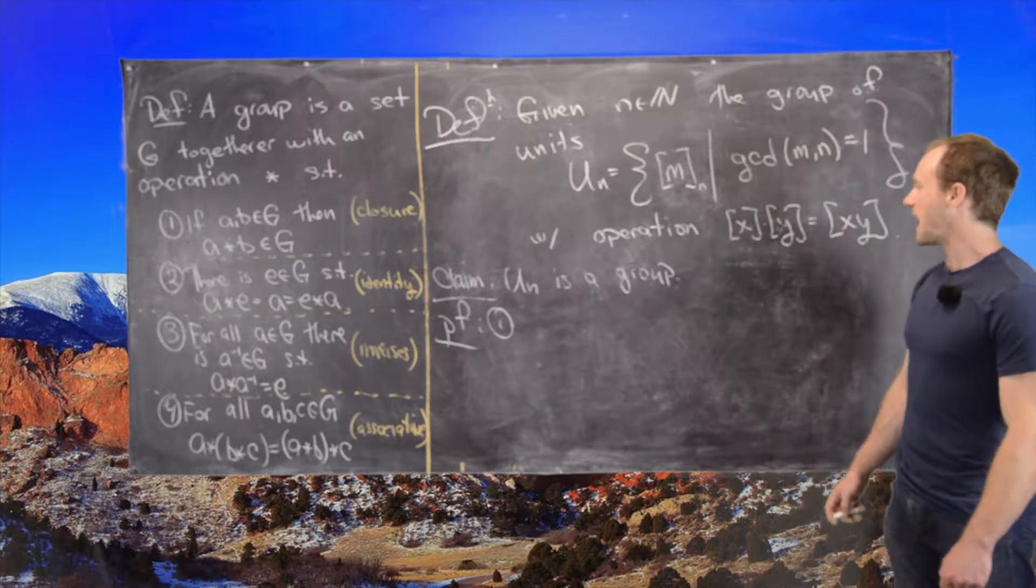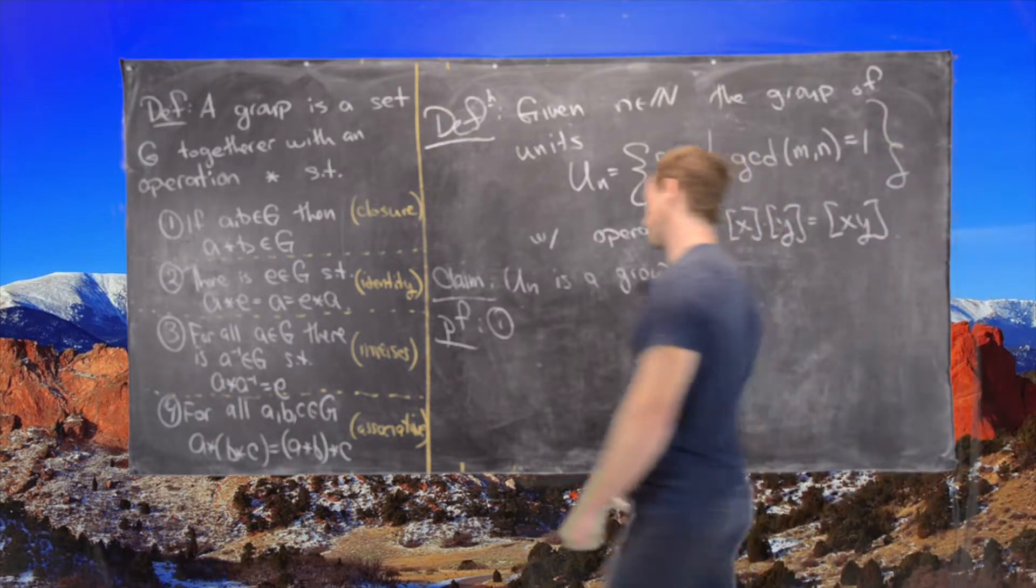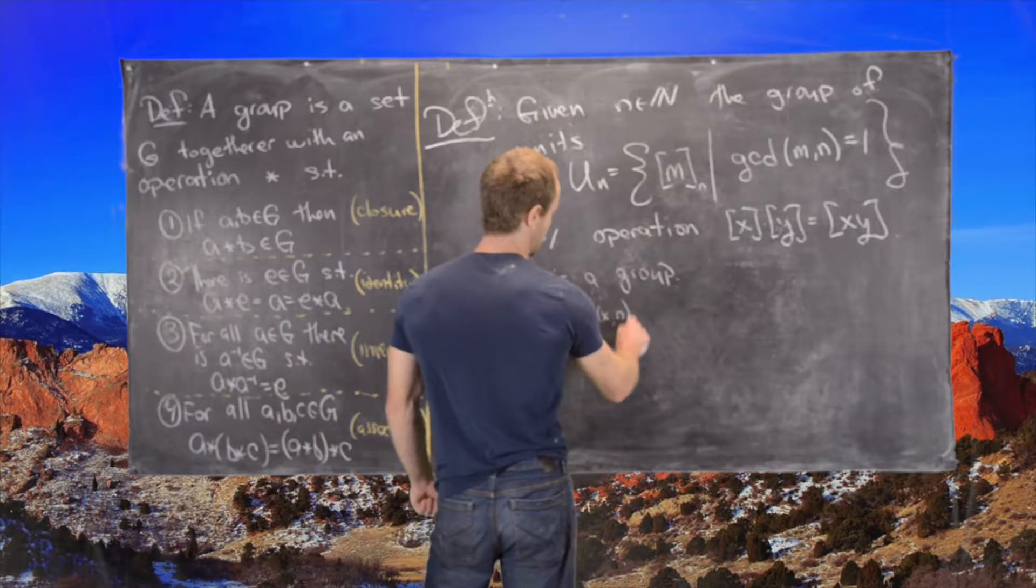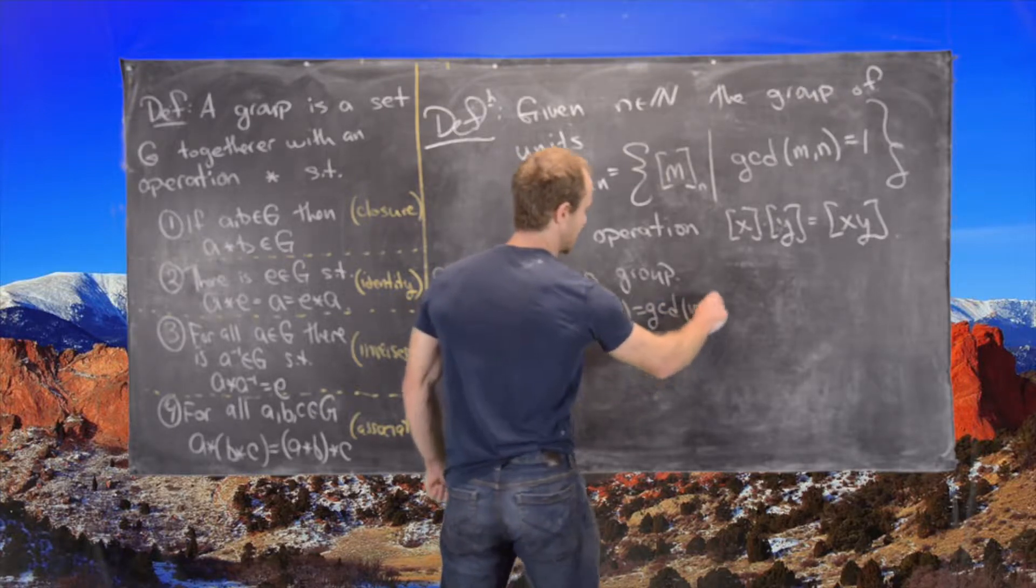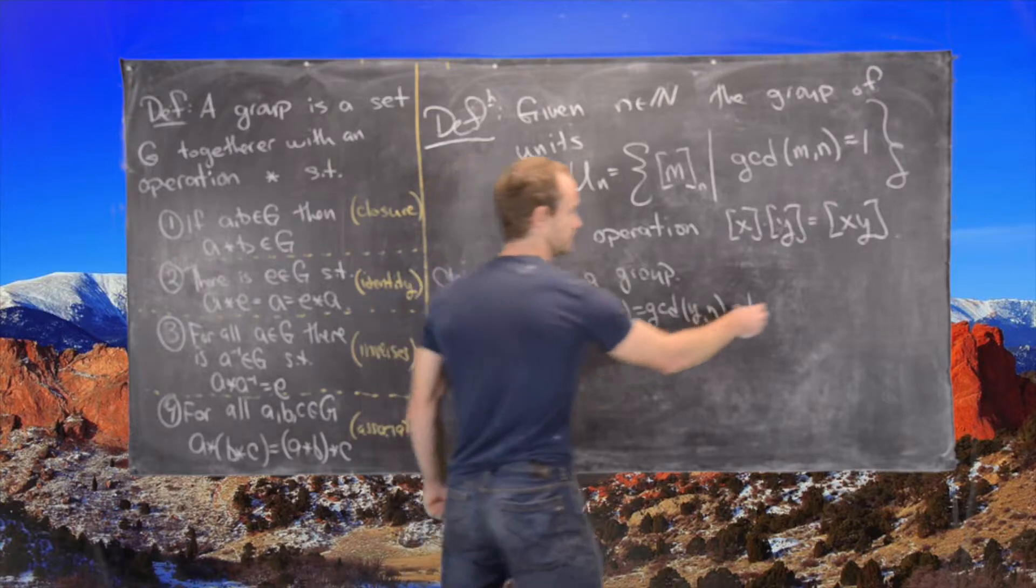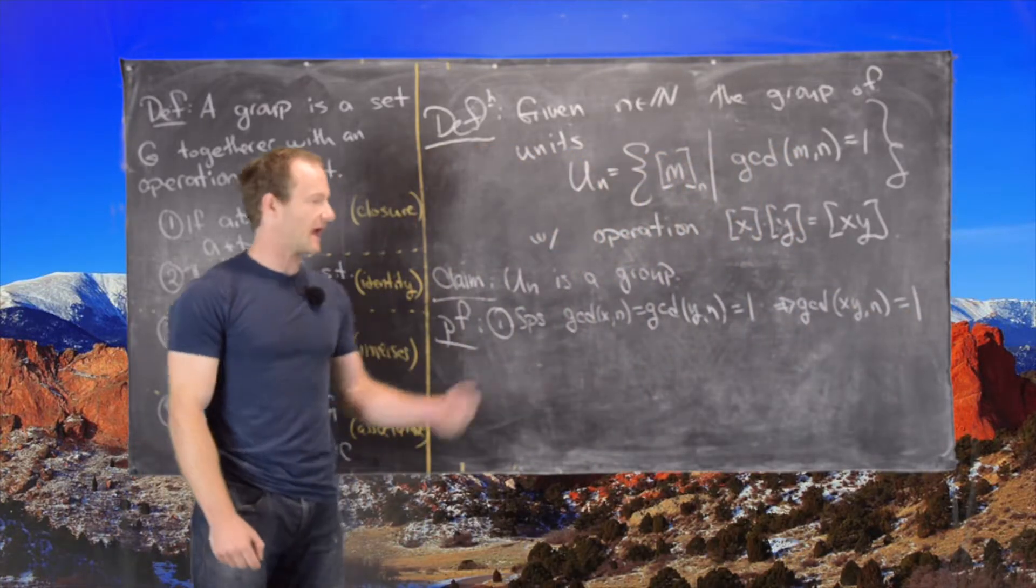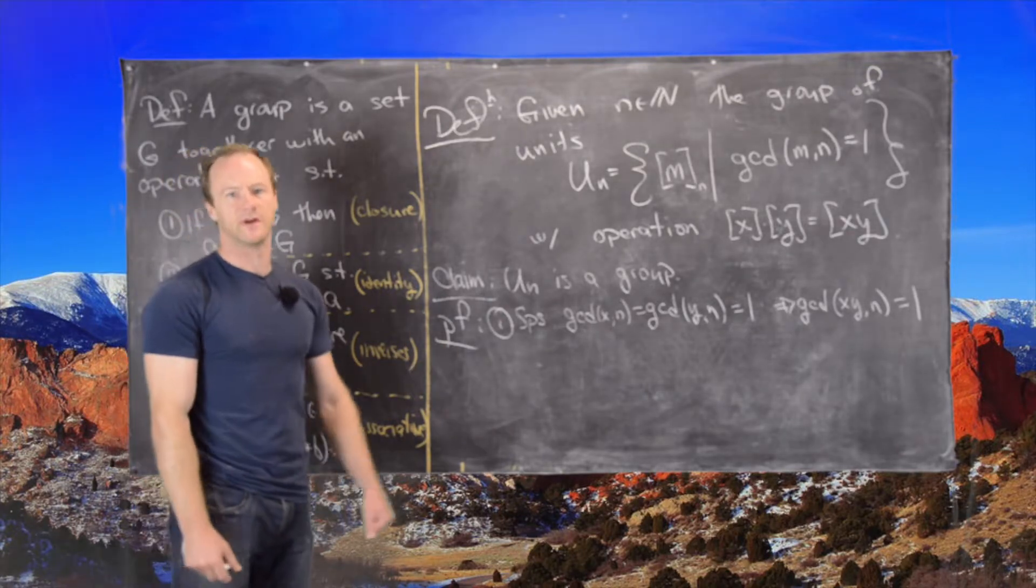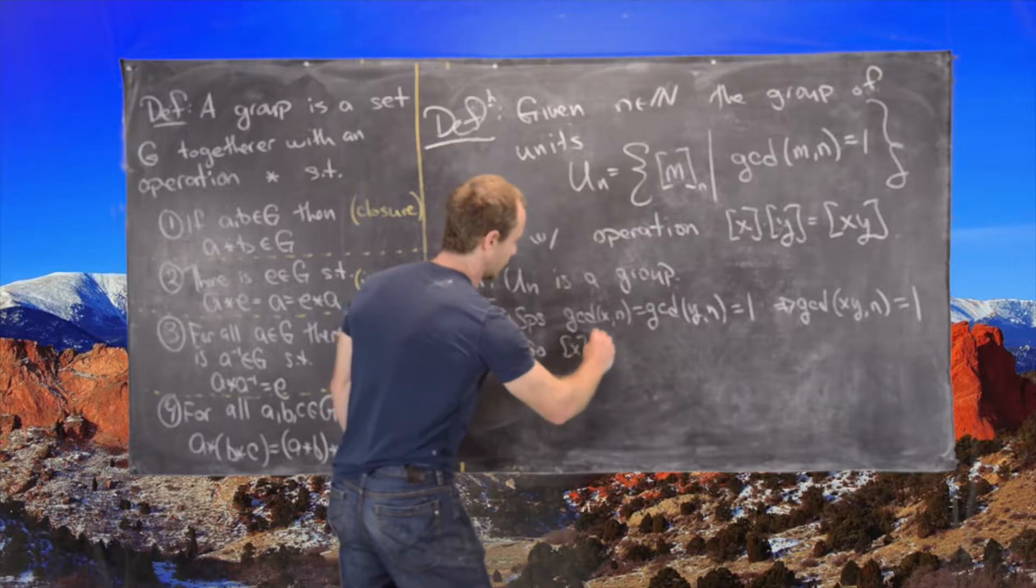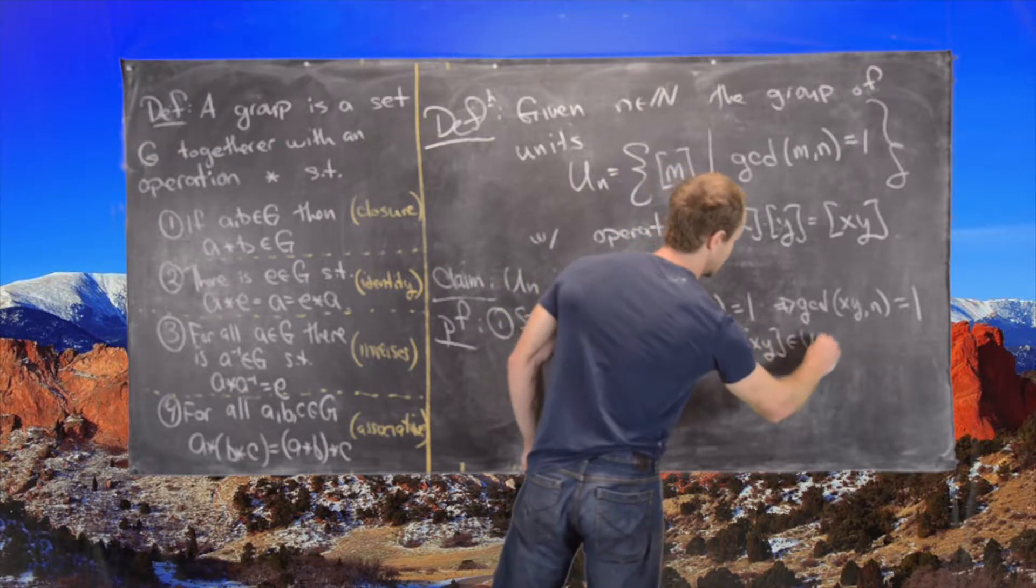Suppose gcd(x,n) = gcd(y,n) = 1. Then that implies that gcd(xy,n) is also 1. That's an elementary result from the beginning of divisibility, so I won't prove that here. But now notice that means if x and y are in Un, then xy is in Un.